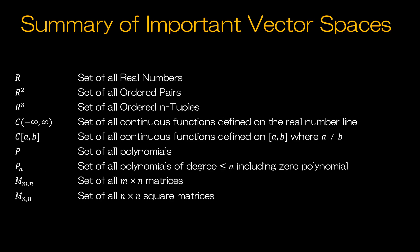Here is a listing of some important vector spaces: the set of all real numbers; the set of all ordered pairs or ordered n-tuples; continuous functions; continuous functions defined on a closed interval where a ≠ b; the set of all polynomials; the set of all polynomials of degree less than or equal to n (which must include the zero polynomial, otherwise it cannot be a vector space); the set of all m-by-n matrices; and the set of all n-by-n square matrices.